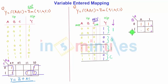That's why it is called mapped entered variable, MEV, or this process is called Variable Entered Mapping. So let us form a group of two.